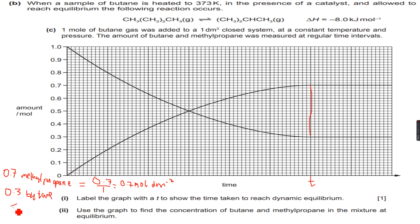And the concentration of butane will be 0.3 over 1 because the volume of the container is 1, which is equal to 0.3 mole per dm³. So these are the concentrations of butane and methylpropane: 0.7 mole per dm³ and 0.3 mole per dm³.